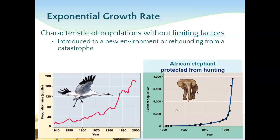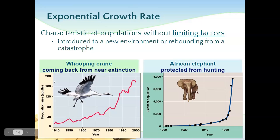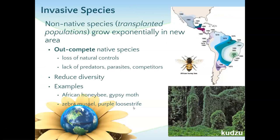Exponential growth also happens when you introduce an organism to a new environment or when a group is rebounding from a catastrophe. Invasive species come in with all these new nutrients available, and they grow exponentially — also because they don't have predators in the area. We started protecting the African elephant from hunting and their numbers really started to rebound. The whooping crane is one of the great successes of the Endangered Species Act.